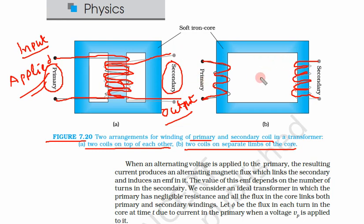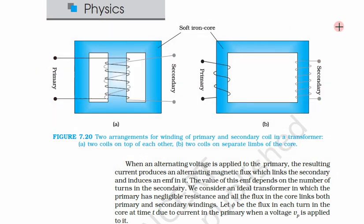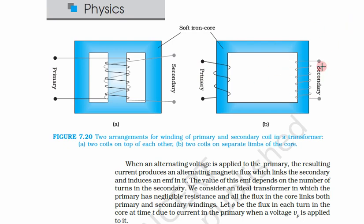We will learn which arrangement is better later. For now, both work on the mutual induction principle, meaning there must be two coils — coils equivalent to solenoids. In the first arrangement there is no gap between them; in the second there is some gap. In both cases, primary is input and secondary is the output. From the diagram, it is clear that the number of turns in the secondary coil is more and in the primary coil is less.